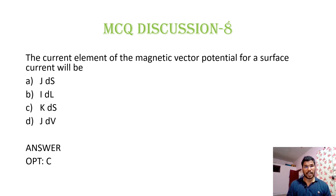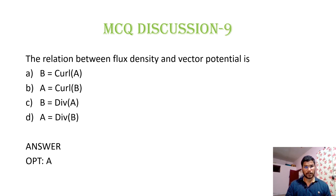MCQ 8: The current element of the magnetic vector potential for surface current will be: option A, J ds; option B, I dl; option C, K ds; option D, J dv. For line current it is I dl, for surface current density it is K ds, and for volume current it is J dv. Since the question asks for surface current, K ds is correct. Option C is correct.